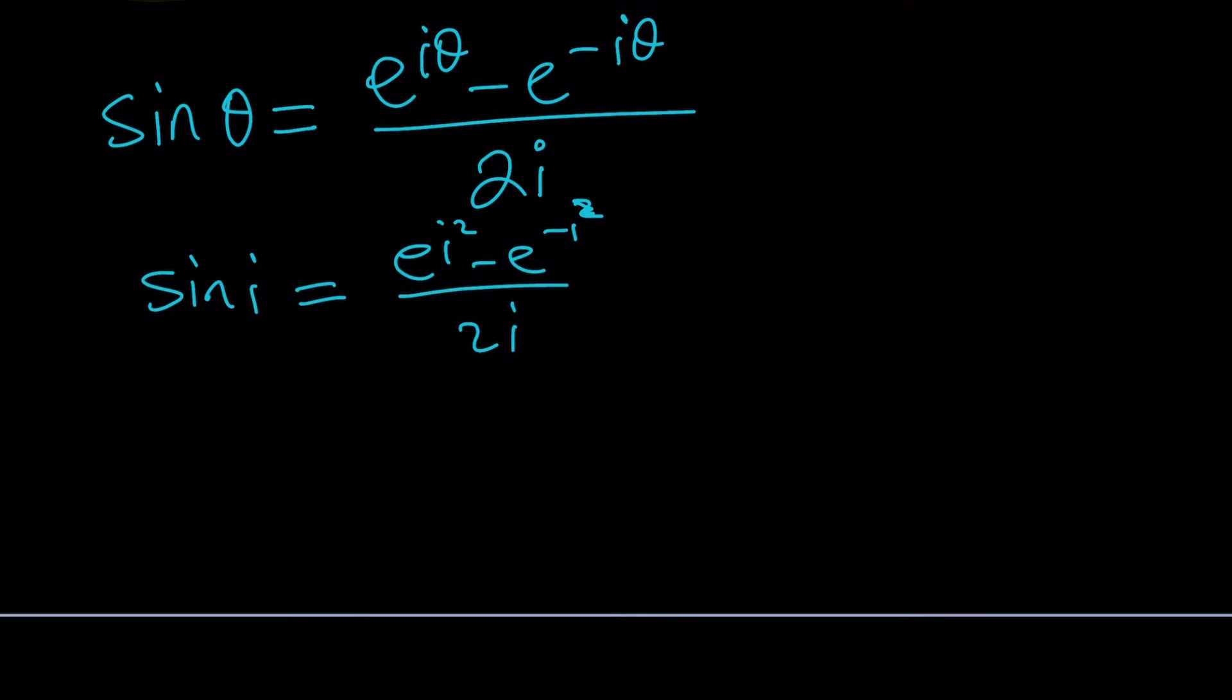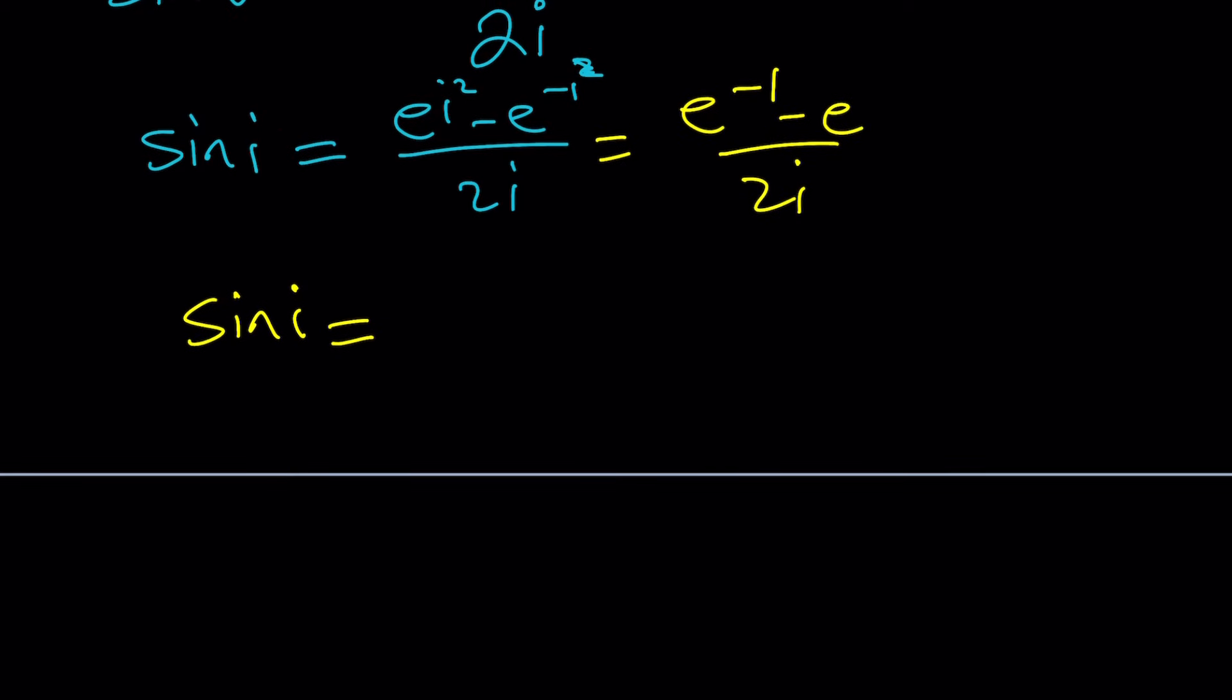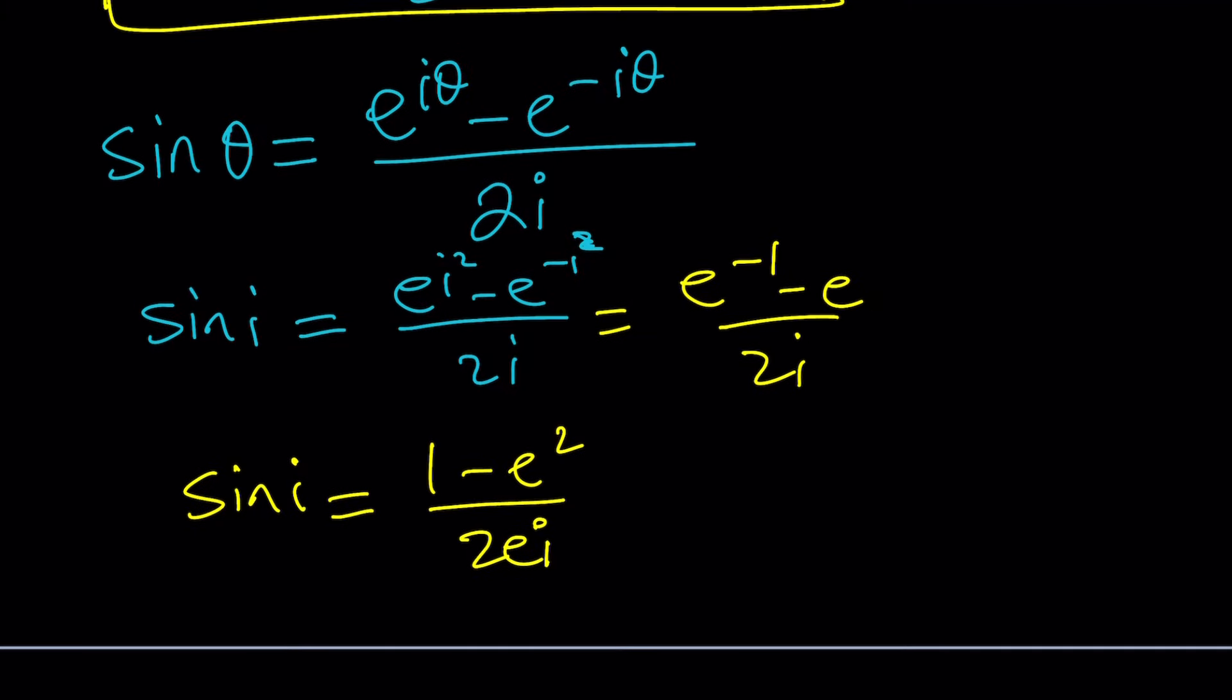And similarly from here, sine i is going to be, this is of course e to the power negative 1 minus 1, not 1 over e, e to the power negative 1 minus e divided by 2i. And that's just going to be after simplifications 1 minus e squared divided by 2ei. E and i are both constants, right? E is Euler's number. Great. So that is my sine i. Great.